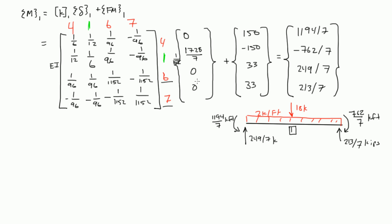Alright, welcome back. In this video we're going to solve for m sub 2. And m sub 2 is equal to your stiffness matrix 2 times your delta 2 plus your fm2.